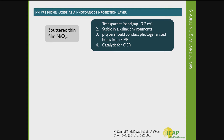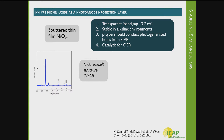Moving on from TiO2, recent work has focused on a different material: nickel oxide. There are a number of reasons to use nickel oxide as a protection layer. It is transparent with a rather large band gap, stable in alkaline environments like TiO2, but it's p-type as opposed to TiO2 which is n-type. The p-type nature should naturally allow it to conduct holes from the silicon valence band. And it is catalytic for the oxygen evolution reaction, which is what we're doing with these photoanodes. These nickel oxide films were synthesized by postdoc colleague Kay Sun at Caltech.